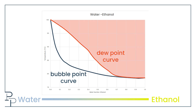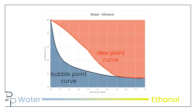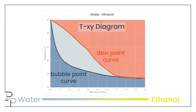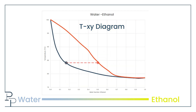Everything above the dew point curve is vapor and everything below the bubble point curve is liquid. The envelope in the middle is a region of vapor-liquid equilibrium. These plots are called T-X-Y diagrams: X is the liquid concentration, Y is the vapor concentration, and T is temperature.